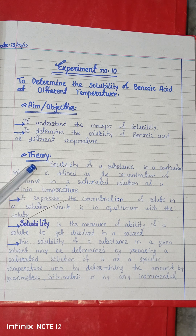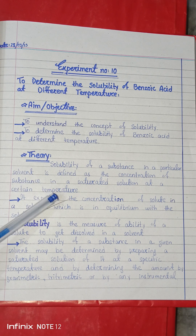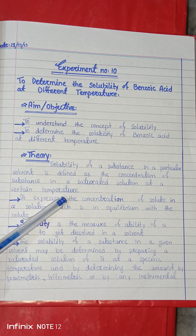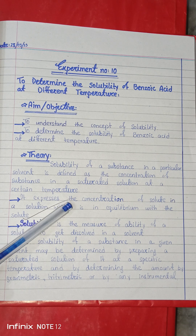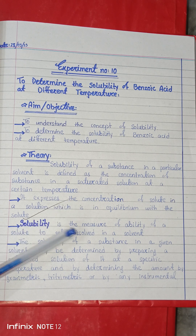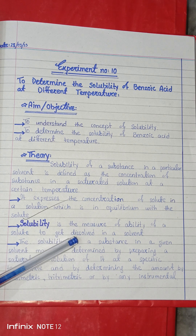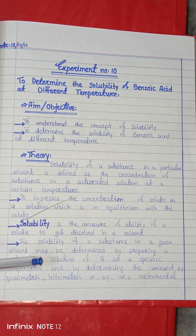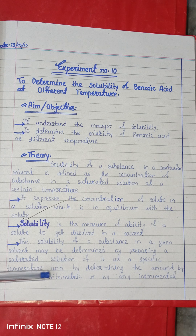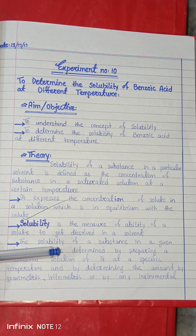In the theory, first of all you have to explain what solubility is. Solubility is defined as the concentration of a substance in a saturated solution at a particular temperature. To determine the solubility, you first have to prepare a saturated solution. Solubility is the measure of the ability of a solute to dissolve in a solvent. You prepare the saturated solution at a specific temperature and then determine solubility gravimetrically and using various instruments.